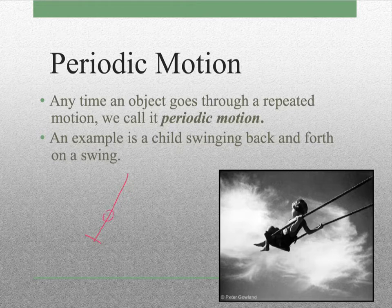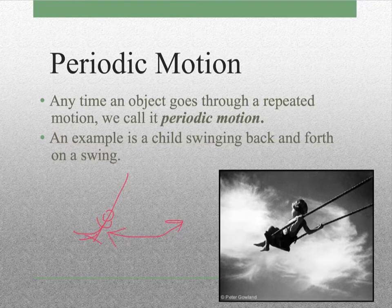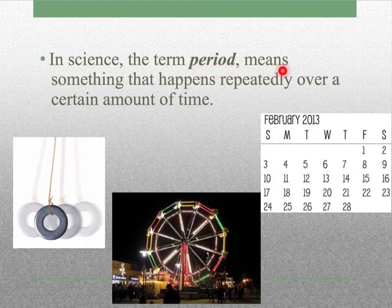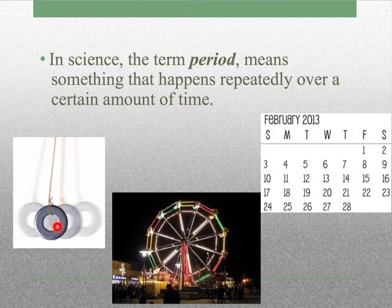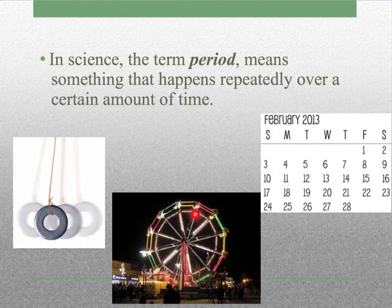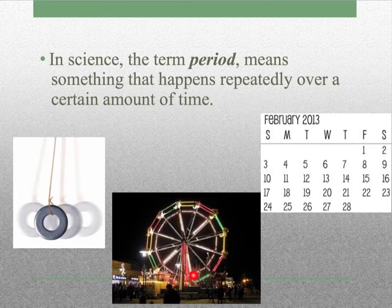If you've got the person here sitting on the swing, they're going to go back and forth, so they repeat. In science, the term period means something that happens repeatedly over a certain amount of time. So we could have something swinging back and forth, and we call this a pendulum. If you're on a Ferris wheel that goes around in a circle, or anything that goes in a circle, it's repeating its path. So that is periodic.